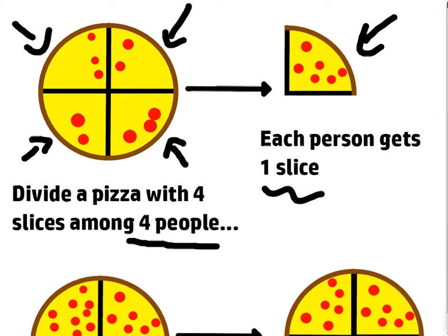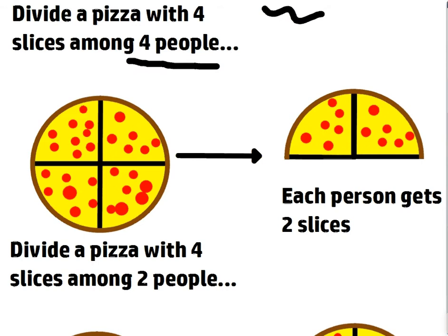Let's look at the next pizza. Same pizza. It's got four slices. One, two, three, four. And I'm going to divide it among two people. So now, each person gets two slices.